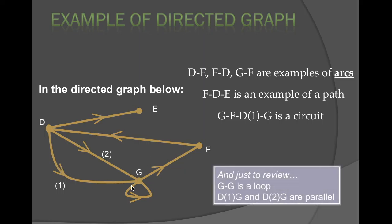Just to review, G, G is a loop. D, 1, G and D, 2, G are parallel from our first PowerPoint for this chapter.